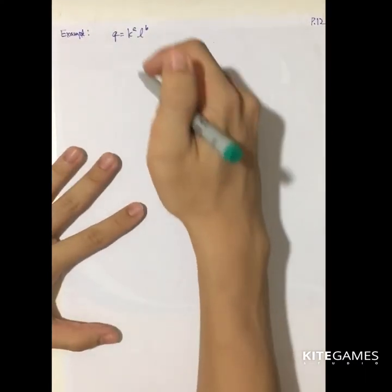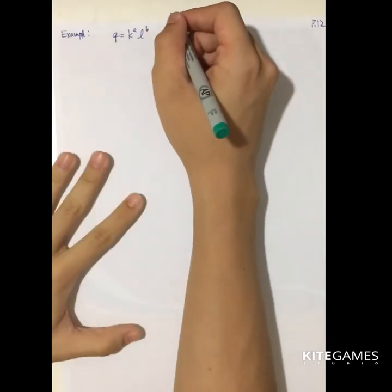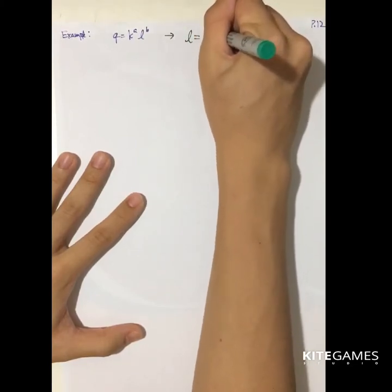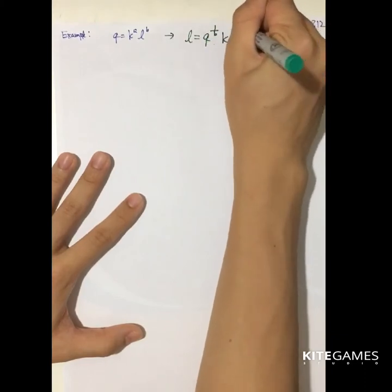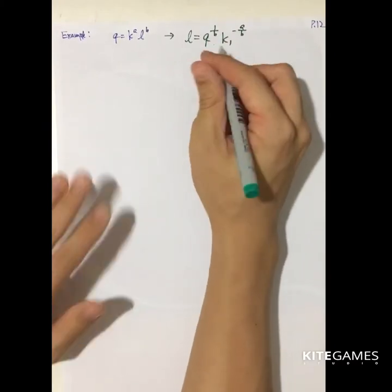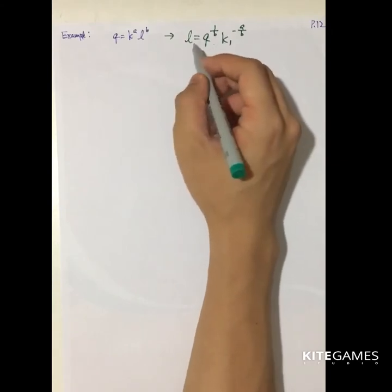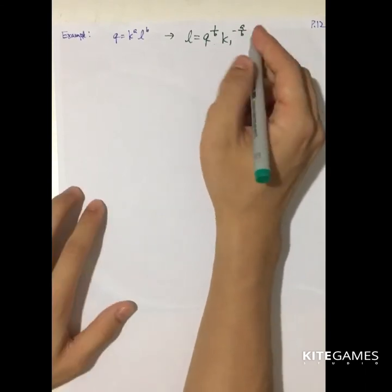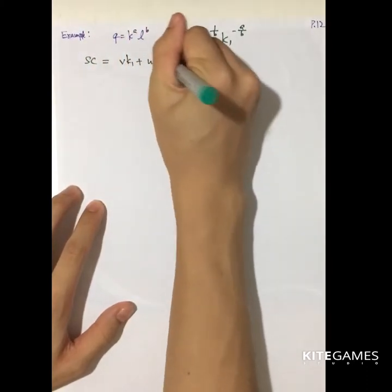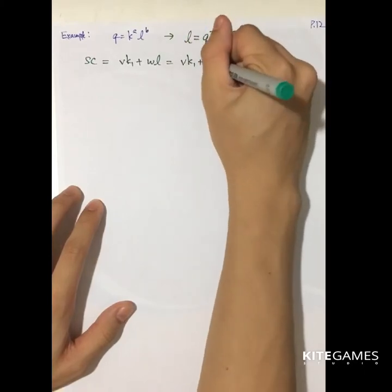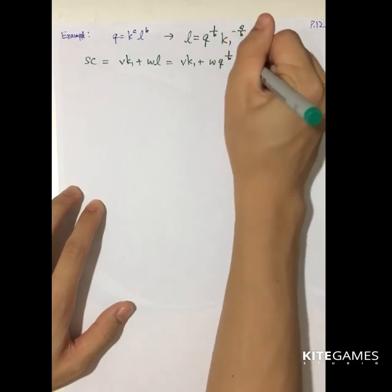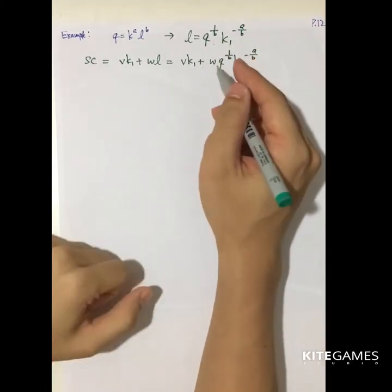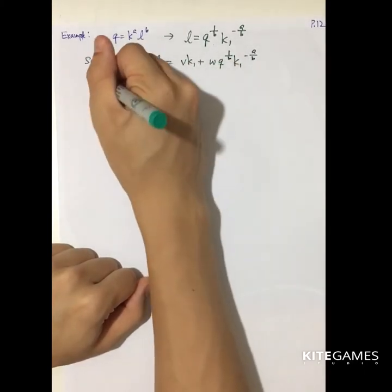Let's look at the Cobb-Douglas example. Given the isoquant, to calculate the short-run total cost, first express labor as L equals Q to the power 1 over B times K1 raised to the power negative A over B. We do this because with K fixed, labor is the only variable, so we solve for L. The short-run total cost is then SC equals V times K1 plus W times Q to the power 1 over B times K1 to the power negative A over B.